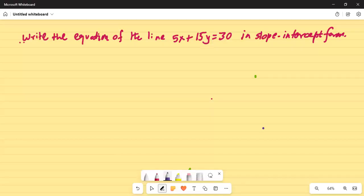Good day everybody. This is Dr. Nandy. Today we are going to talk about equation of a line in slope-intercept form. Here's the problem: write the equation of the line 5x plus 15y equals 30 in slope-intercept form.